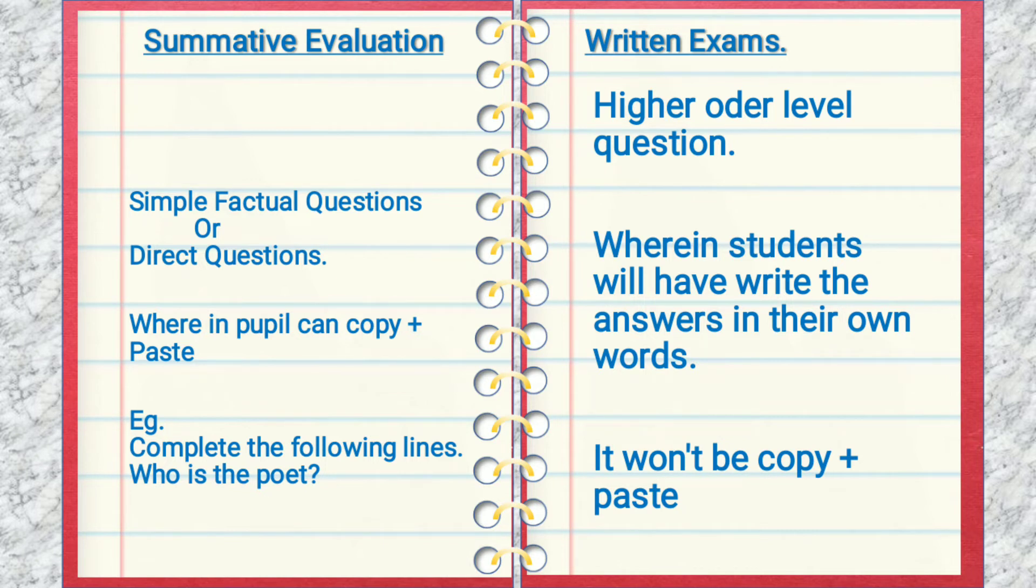Another example: 'Who is the poet?' The name of the poet may be mentioned in your seen comprehension or unseen comprehension. I repeat, the first question will be simple factual or direct questions, wherein you can get the answers directly from the passage provided to you.